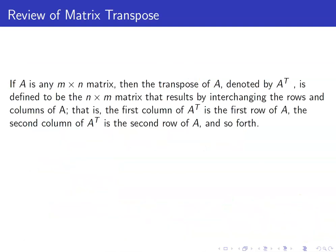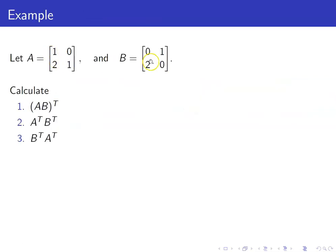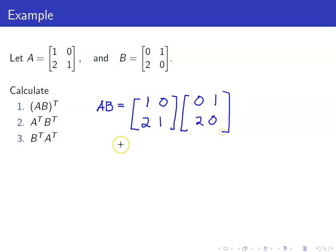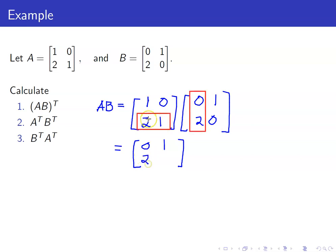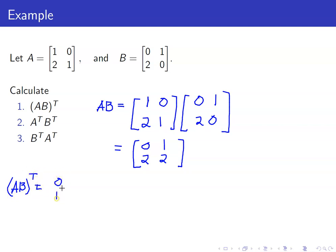Let us recall the definition of matrix transpose: we are simply interchanging the rows and columns of A. For two matrices A and B, let us calculate the following. First, the transpose of AB: compute AB, which equals a matrix with entries 0, 1, 2, 2. Therefore, (AB)ᵀ equals the matrix with entries 0, 1, 2, 2 transposed.